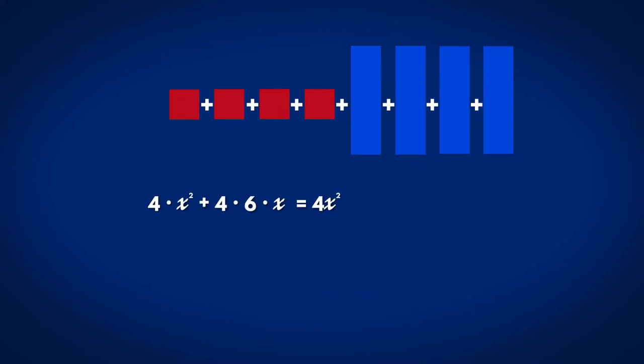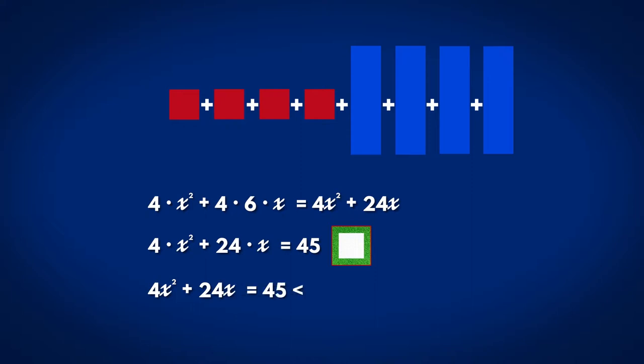If we solve the equation 4x² plus 24x equals 45, where 45 is the area of the lawn planted area, we will find the maximum width of the surface to be planted with grass. The equation is written in the equivalent form as follows.